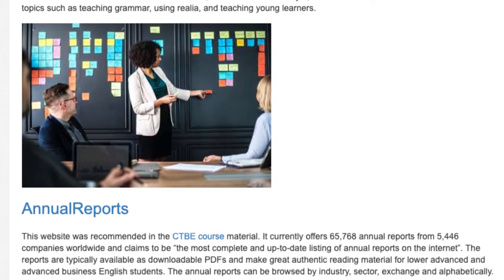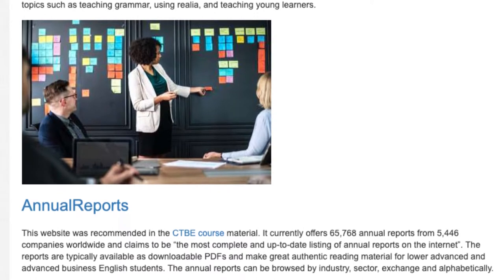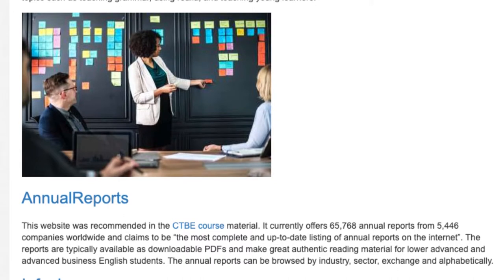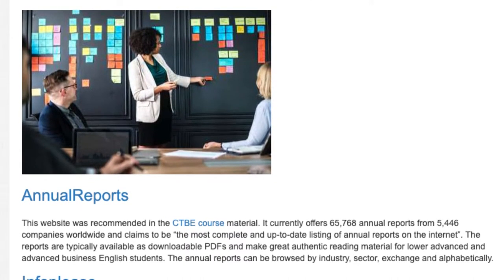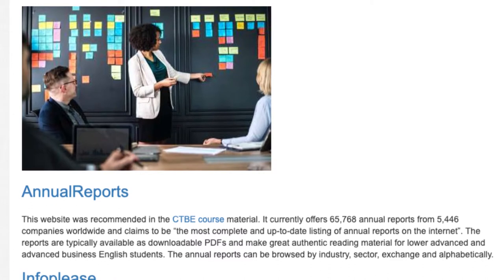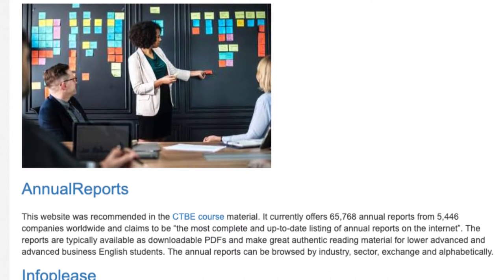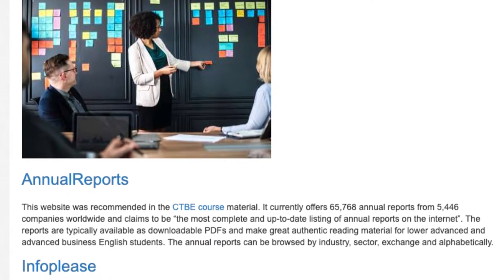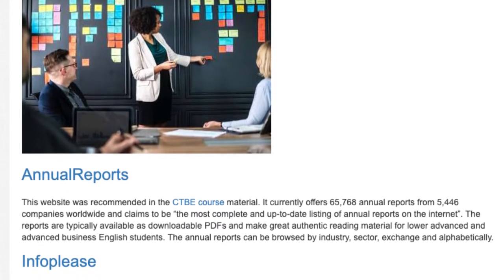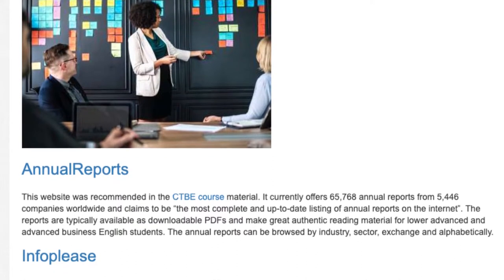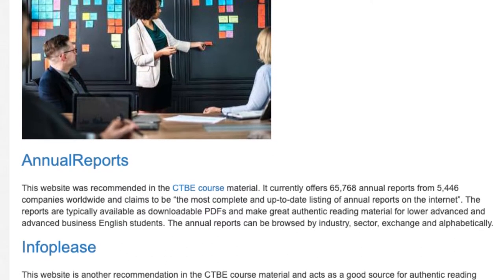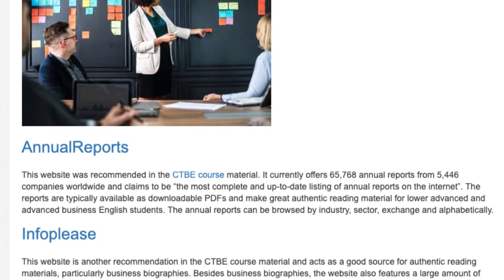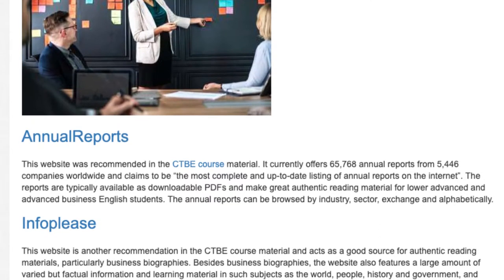Annual Reports. This website was recommended in a CTBE course material. It currently offers 65,768 annual reports from 5,446 companies worldwide and claims to be the most complete and up-to-date listing of annual reports on the internet. The reports are typically available as downloadable PDFs and make great authentic reading material for lower advanced and advanced business English students. The annual reports can be browsed by industry, sector, exchange, and alphabetically.